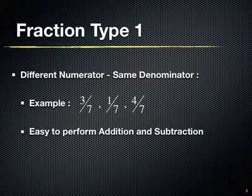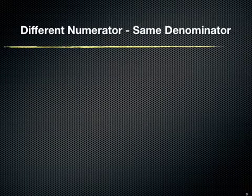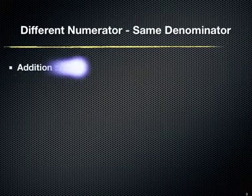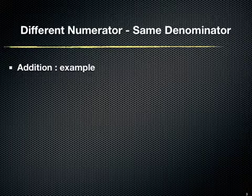They have same denominator 7 but having different numerators as 3, 1, and 4. Let us see a few examples which will explain how to perform addition and subtraction on fractions where we have different numerators and same denominator.